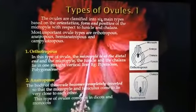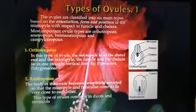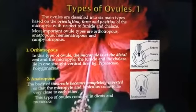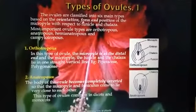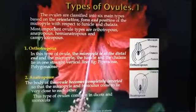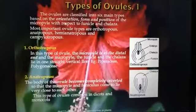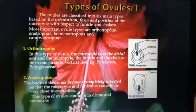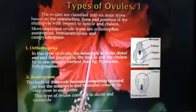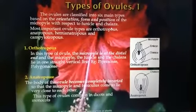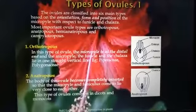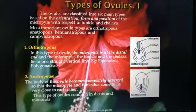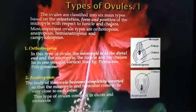The next topic is types of ovules. Ovules are classified into six main types based on the orientation, form, and position of the micropyle with respect to the funicle and chalaza — that is, how the micropyle, chalaza, and funicle are arranged and oriented on the ovule.